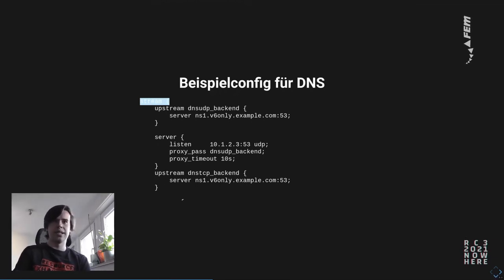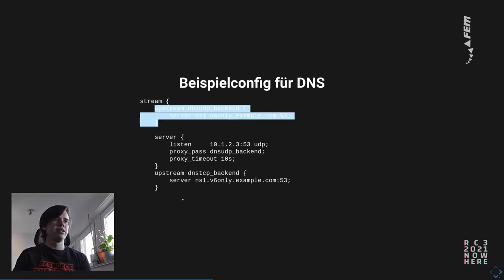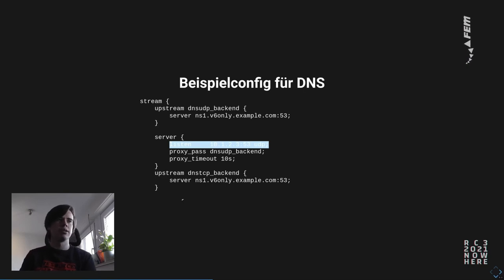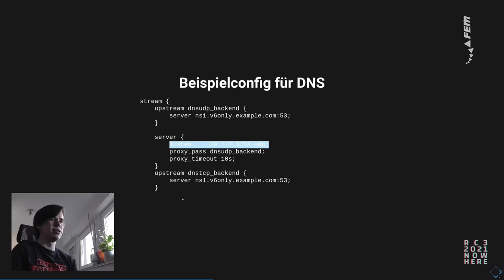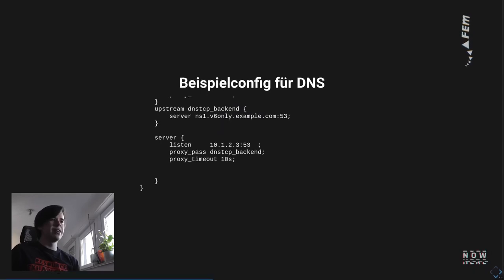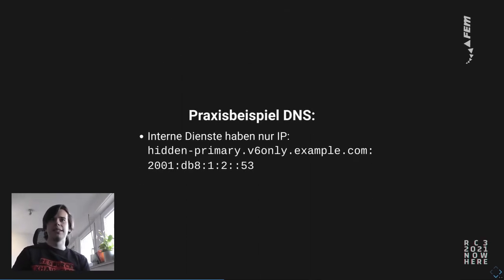Here's an example config. You can see an nginx stream block — that's not the standard HTTP part, it's only for layer 4, TCP or UDP, in this case for IPv6-only. You can specify an upstream for DNS UDP. It tells nginx that for this IP address there's the UDP port, and this 10.1.2.3 is of course only an example. Then it passes the traffic to the corresponding backend, and there's also the TCP variant. So this is really not a lot of work.